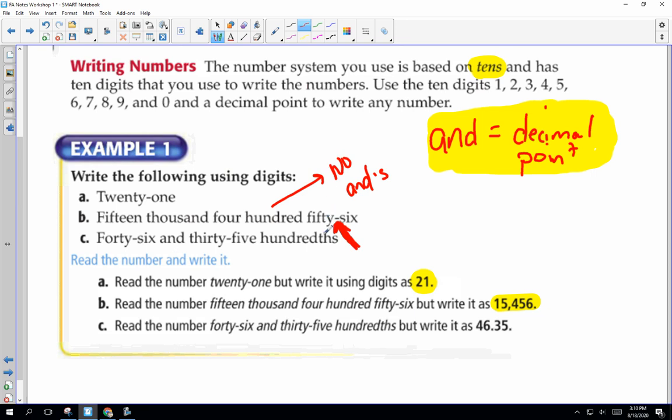So forty-six and thirty-five hundredths. So a hundredths is two away from the decimal point. So it's 46.35. You guys can write that down here.